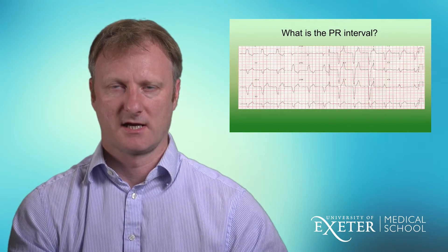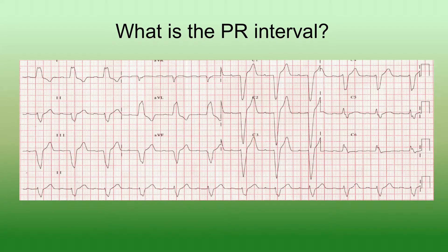Looking at an example ECG, one useful tip when looking for P waves and measuring the PR interval is that limb lead II, as well as V1 and sometimes V5, can be very good for showing P waves. This is a function of the axis of the atria compared to those leads, and it gives you the best chance of identifying the P wave.